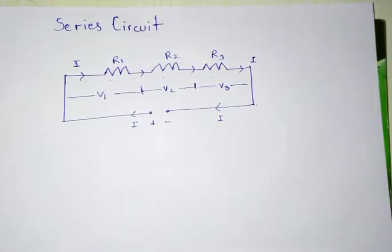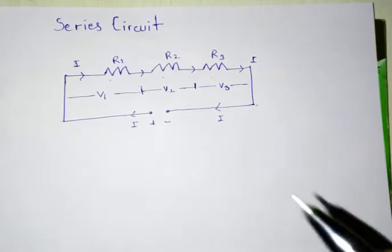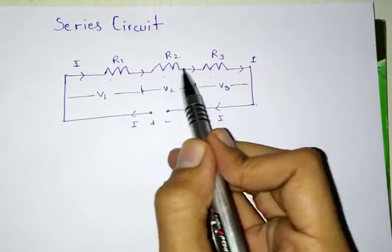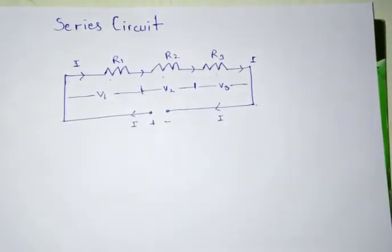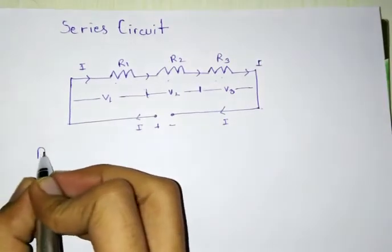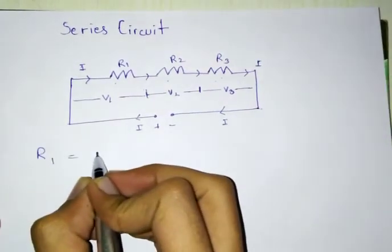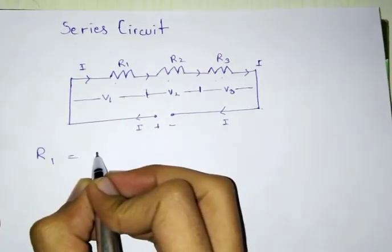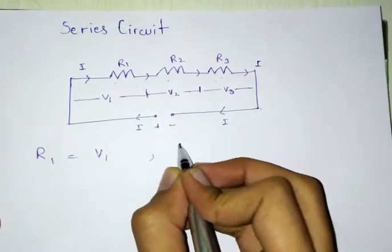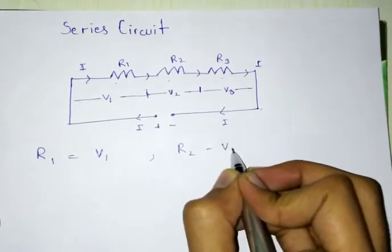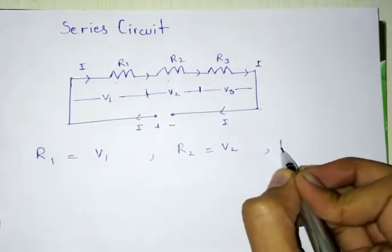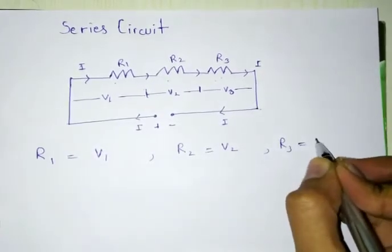Now according to Ohm's law, we all know that for each resistance there will be a voltage drop along it. For example, R1 resistance pe it's V1, R2 pe it's V2, and R3 pe it's V3.